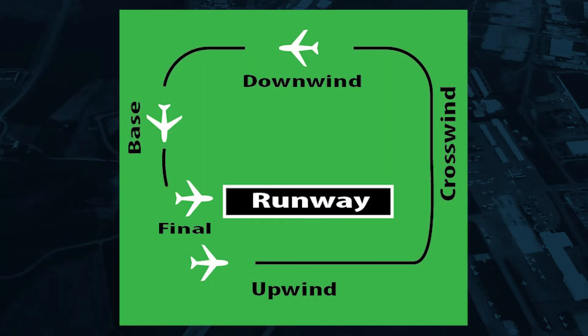A traffic pattern is a standard path that aircraft follow when taking off or landing while keeping the airfield in sight. When arriving at an airport, planes don't usually just come in and land — they normally enter the traffic pattern and land from there. The different legs of the pattern have specific names like crosswind, downwind, base, and final. Saying these locations helps others identify where the landing aircraft is.